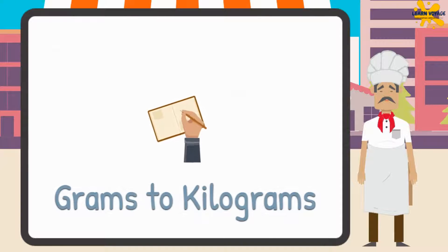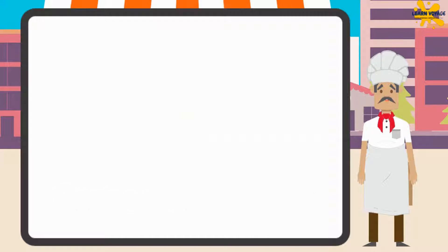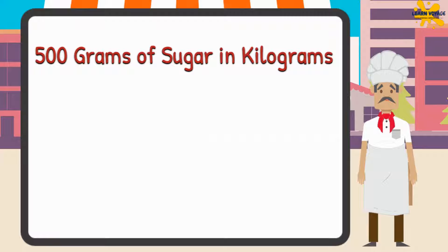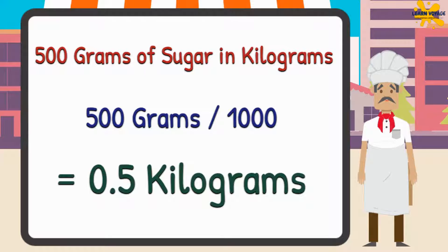Now let's do some calculations to convert grams to kilograms. Let's say I add 500 grams of sugar in cookies. To get the value in kilograms, we need to divide it by 1000. So if we divide 500 grams by 1000, we get 0.5 kilograms.